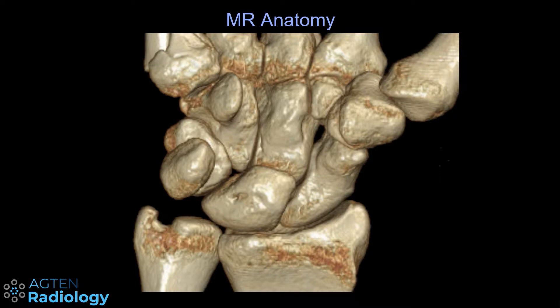The first one I would like to show you is located in this region and it's called the os centrale carpi. It can make a clicking noise in the wrist and sometimes needs to be removed.